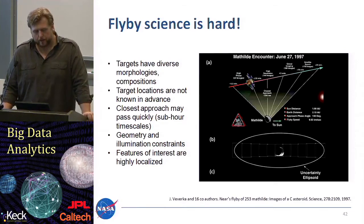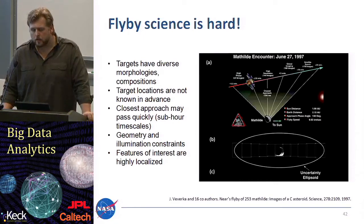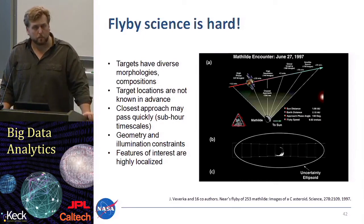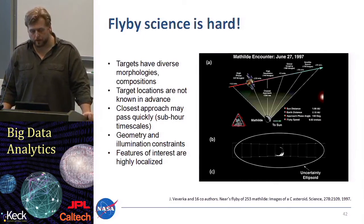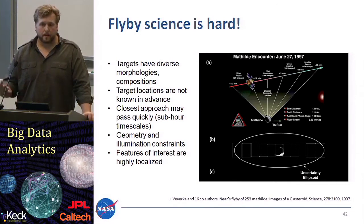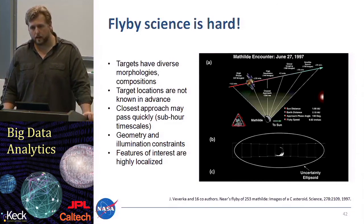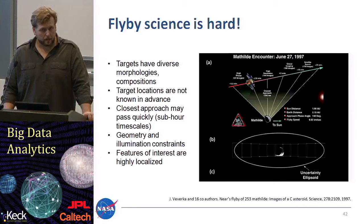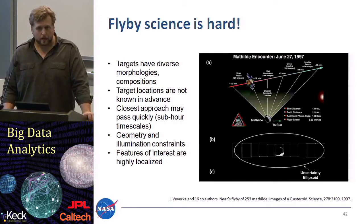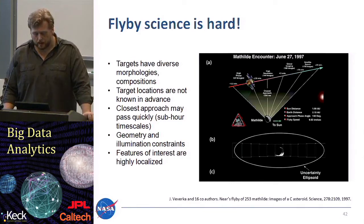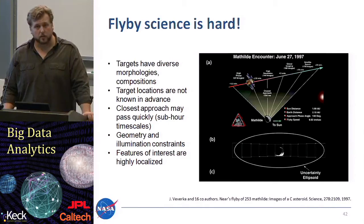Also, the geometry and the illumination constraints are not known beforehand. The features of interest are very often highly localized. You could imagine if you visit a moon of Jupiter, for example, you can plan all the orbital mechanics beforehand because you exactly know where the object is going to be and where to point your camera's instrument. That's not the case in flyby missions for asteroids and comets.